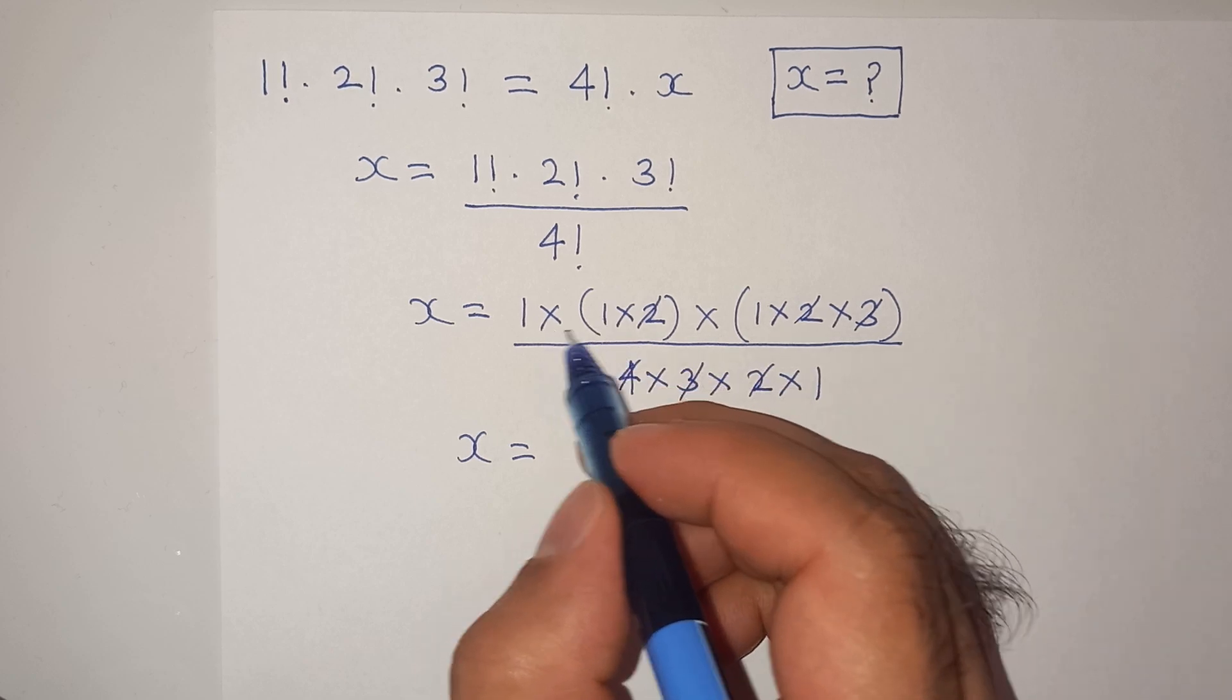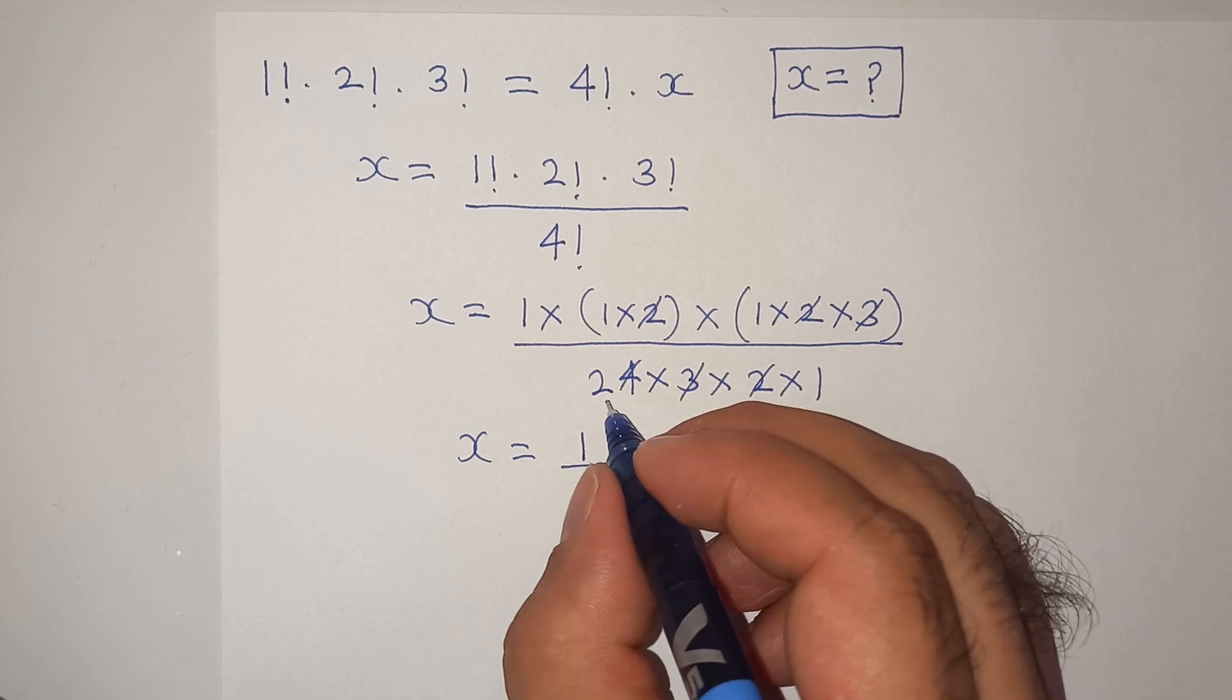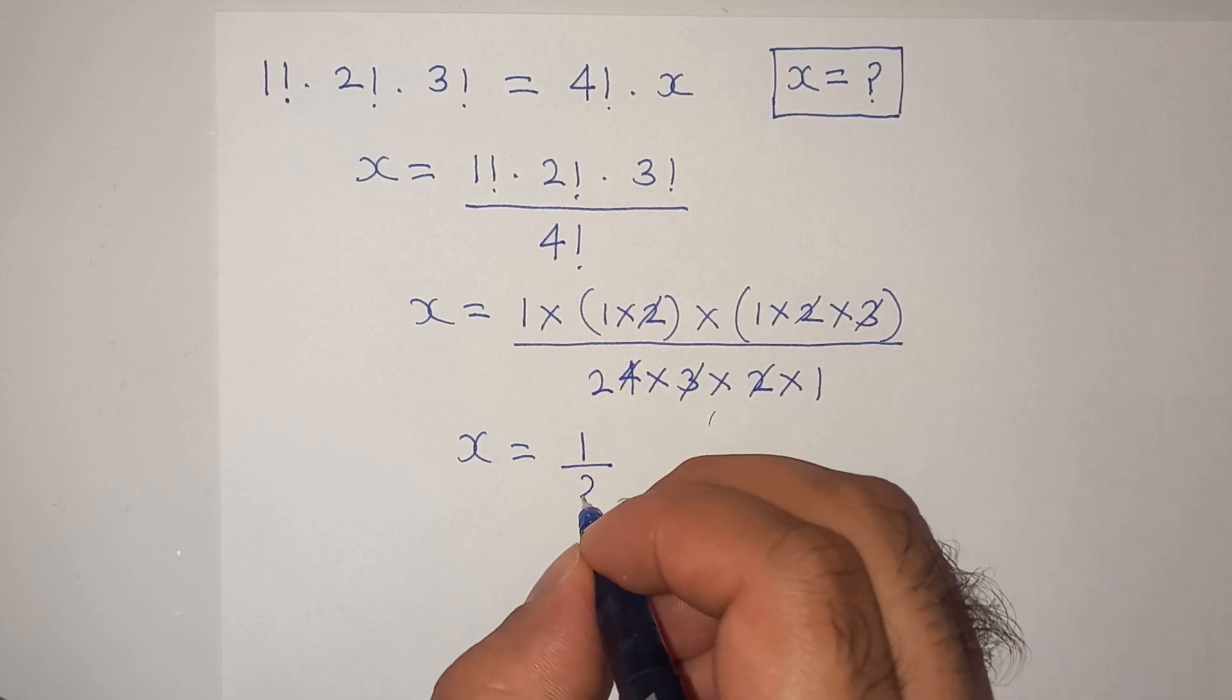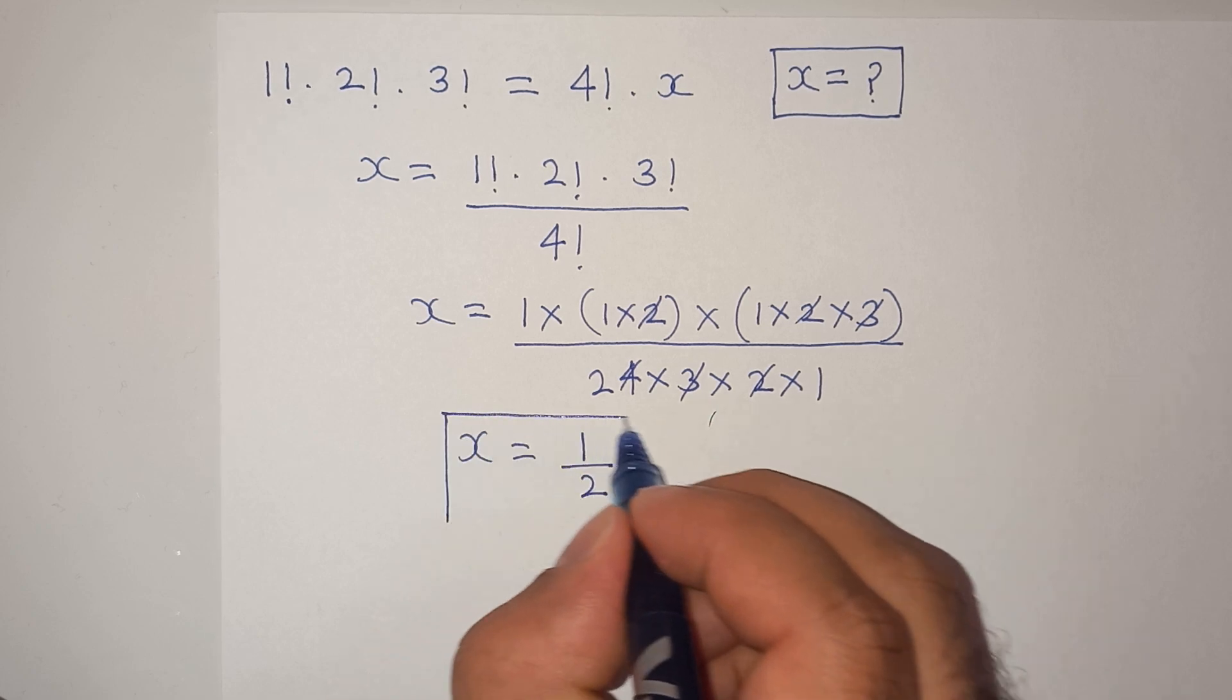So we have on the numerator, we are left with only 1 and in the denominator, we have 2 multiplied 1 which is 2. So the final value of x is 1 by 2.